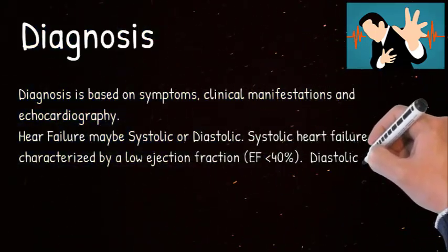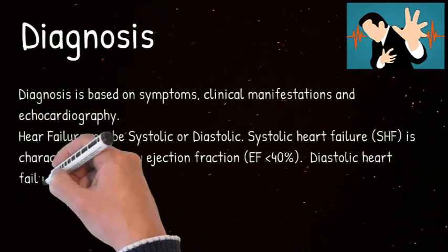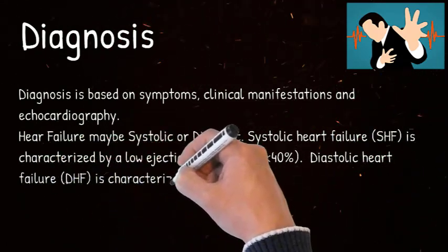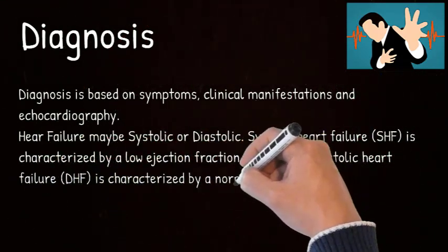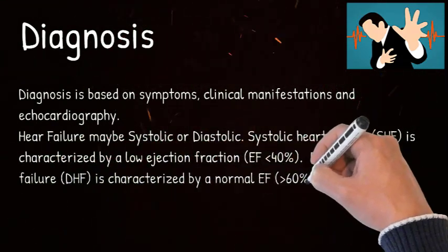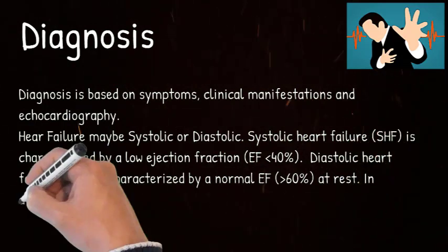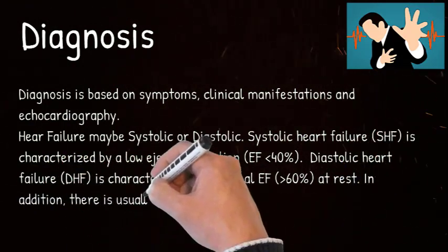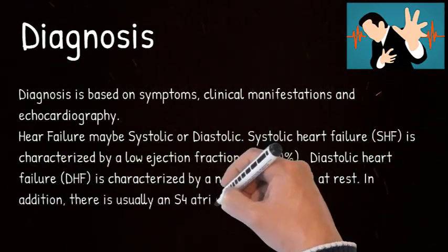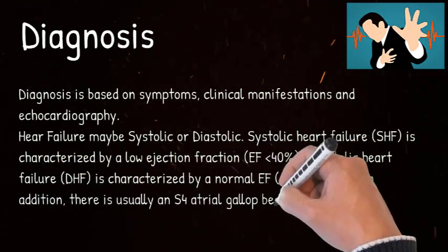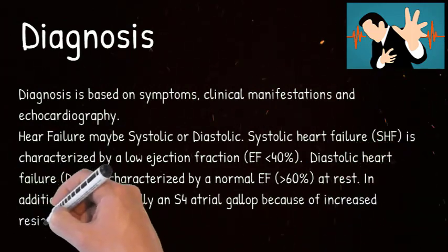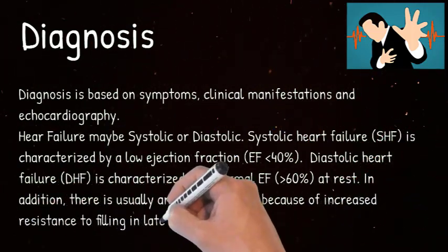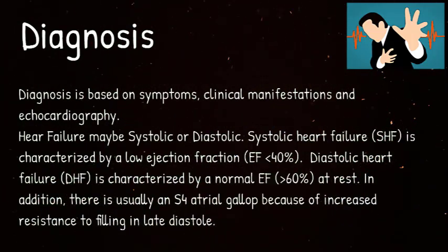The normal ejection fraction value ranges from 55% to 80%. Diastolic heart failure (DHF) is characterized by a normal EF greater than 60% at rest. In addition, there is usually an S4 atrial gallop because of increased resistance to filling in late diastole.